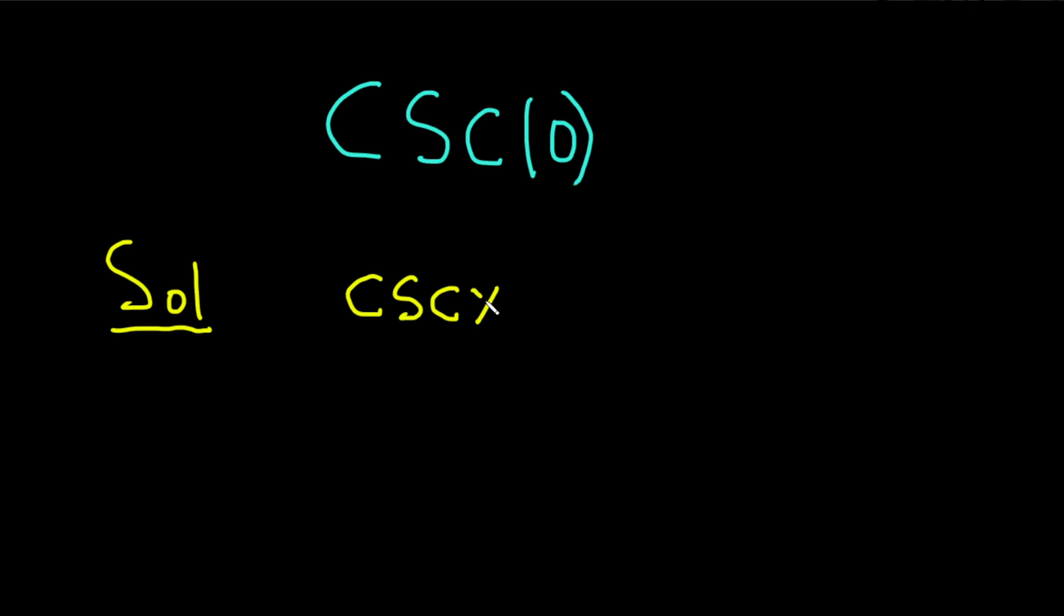So the cosecant of x is equal to 1 over the sine of x.